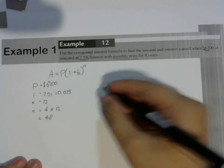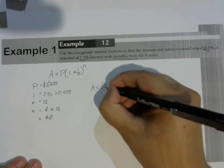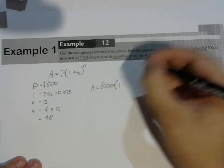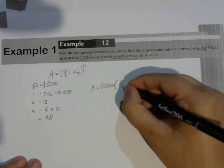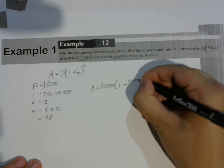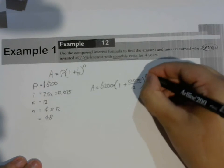Now I can put all of that into my equation. A equals P, our principal, $6,200, times, open bracket, 1 plus I, which is 0.075, divided by K, which is 12, to the power of 48.